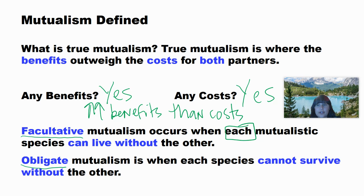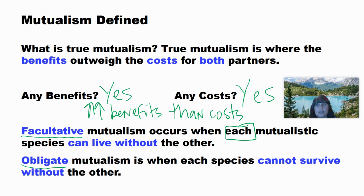Obligate — think of it like being obligated to do your chores: you have to do them. Obligate mutualism is where each species cannot survive without the other. They have to be in the relationship in order to survive, so the benefits are basically survival. It could be that nutrients aren't available through another means, or that one is offering protection and that's the only way it survives. We'll go over several examples and you'll practice deciding whether something is facultative or obligate.